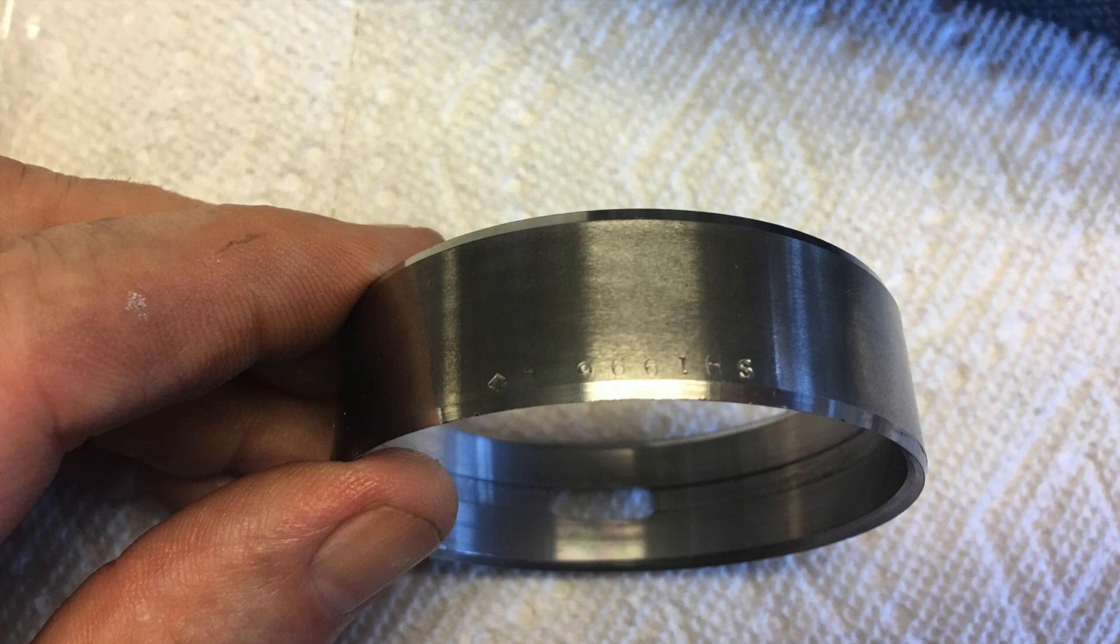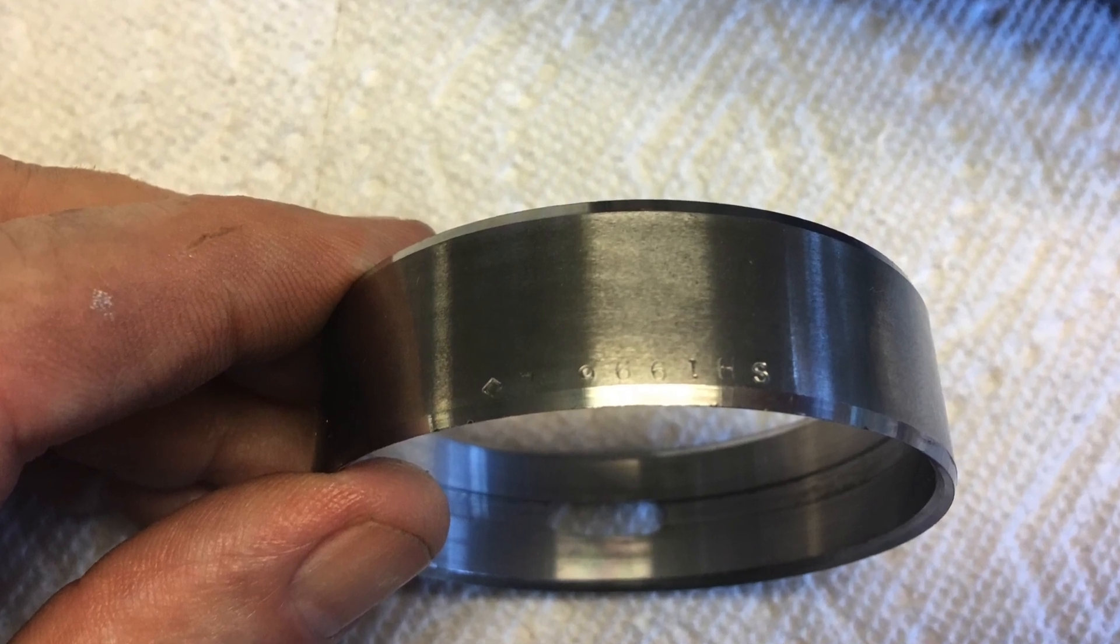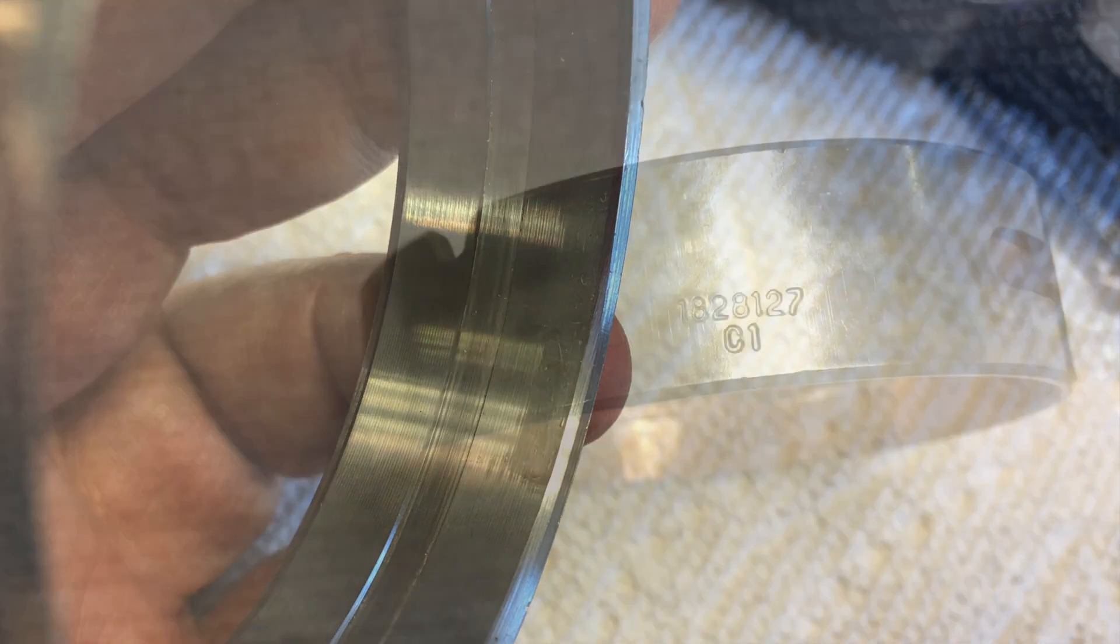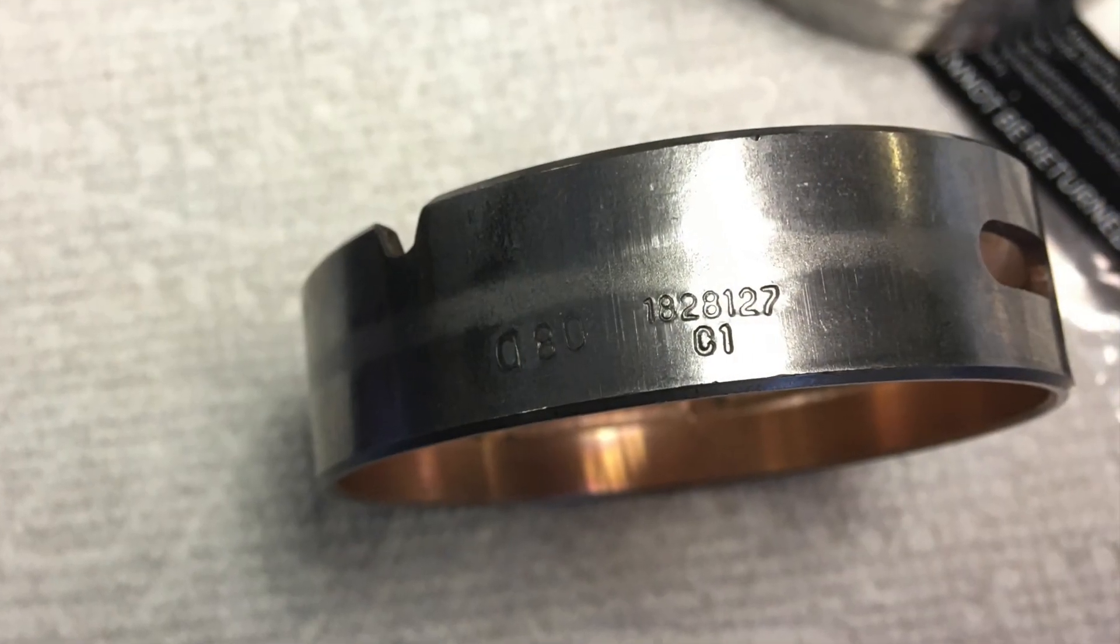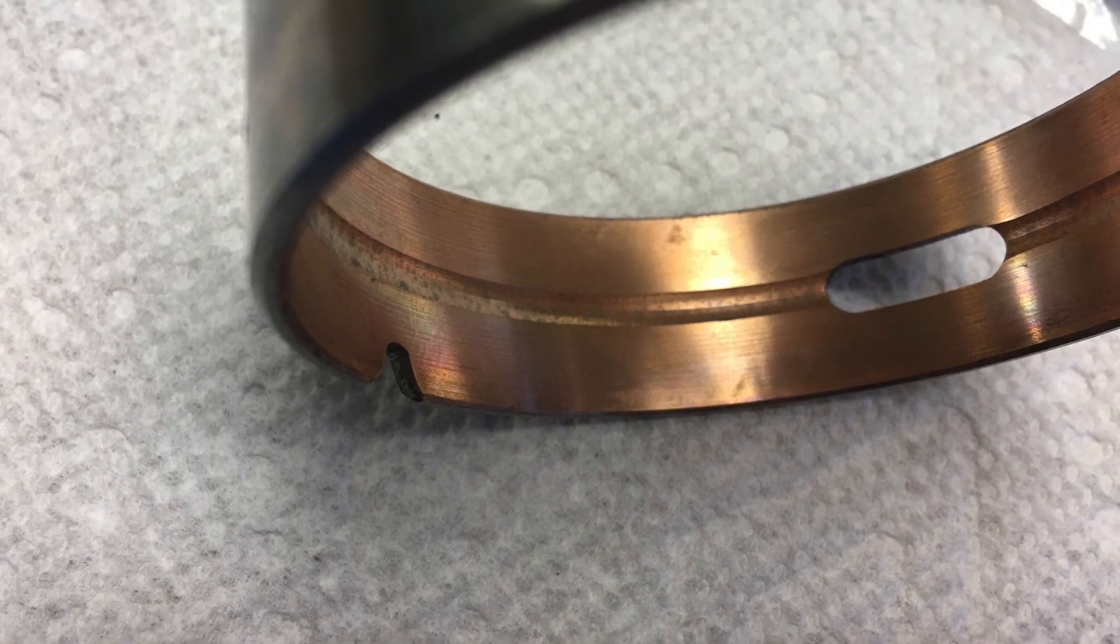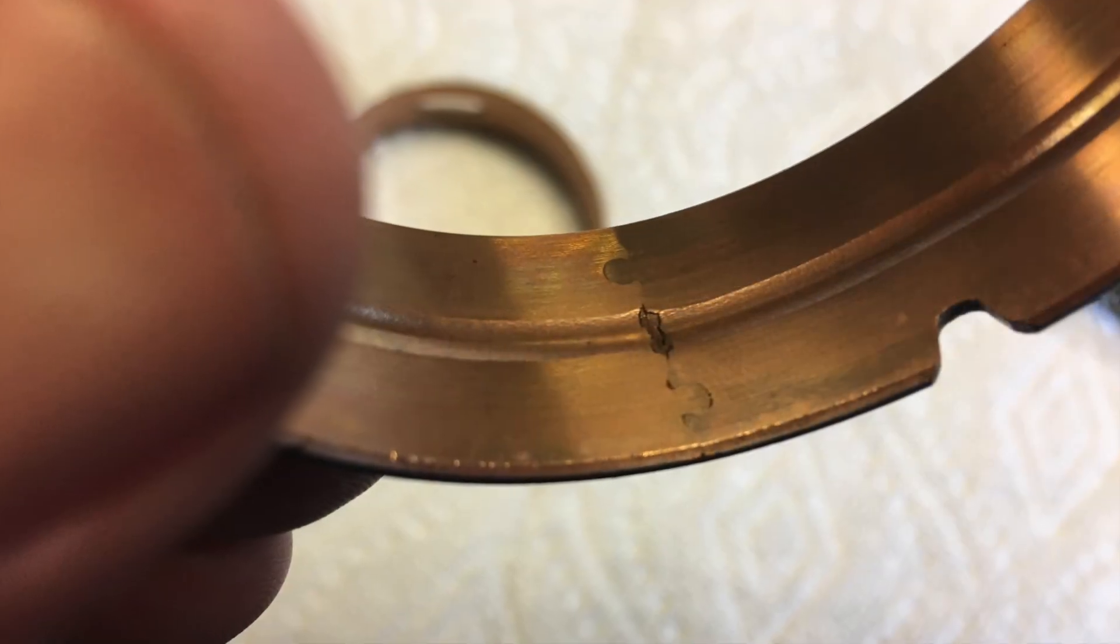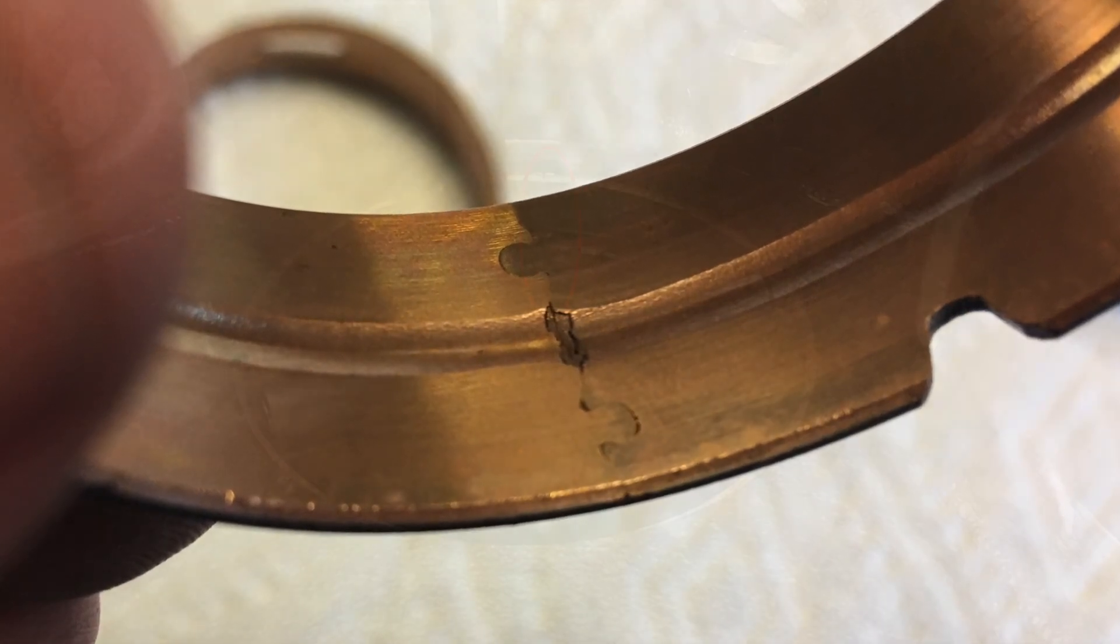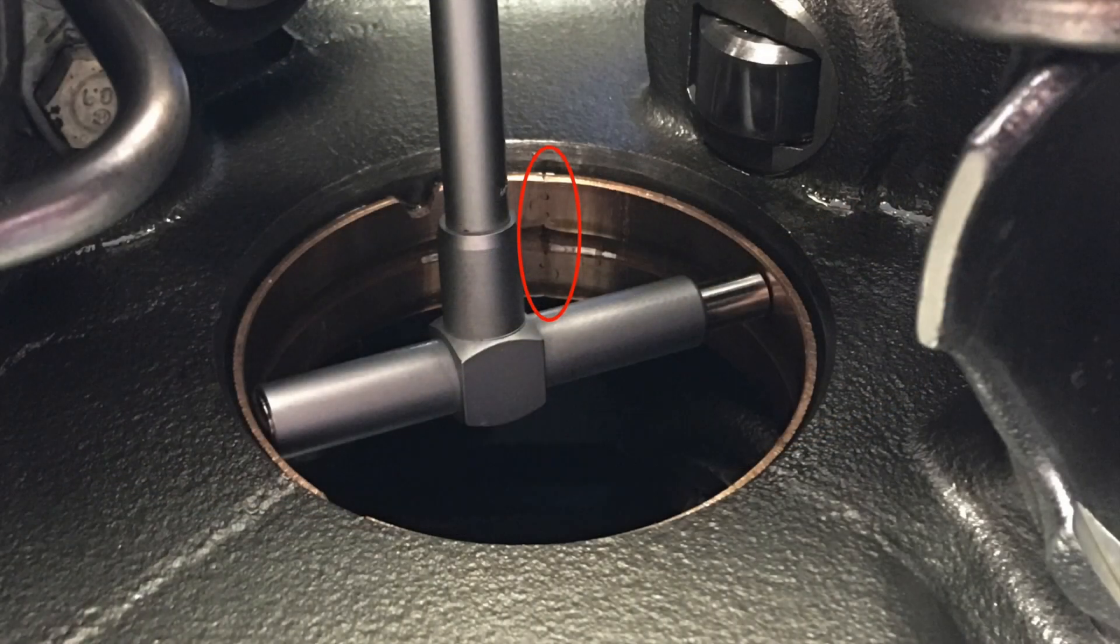The way Clevite stamps their ID on the outer diameter affects the bearing surface after final honing. Navistar's supplier also imprints the information, but it doesn't affect the bearing surface. Although they have a funky means of mechanically merging the ends, it's designed to fit at the top, where the bearing is not loaded.